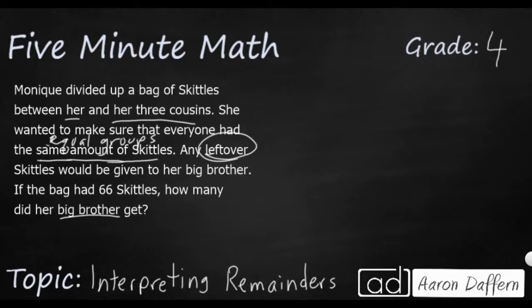So first we need to figure out that Monique and her three cousins are actually four people getting the Skittles. It would be easy for us to make a simple mistake and just focus on this three, but it's Monique and her three cousins. So four people, that's our divisor, are going to be splitting up a bag of 66 Skittles. So we're going to divide our divisor four into 66. That's our dividend.